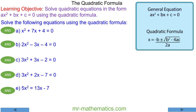In this lesson we're going to solve quadratic equations in the form ax² + bx + c = 0. It is important that the equation always equals zero. We're going to use the quadratic formula to do this. Check out the link in the description to see how we can derive the formula by completing the square of the general equation. We begin with question a.